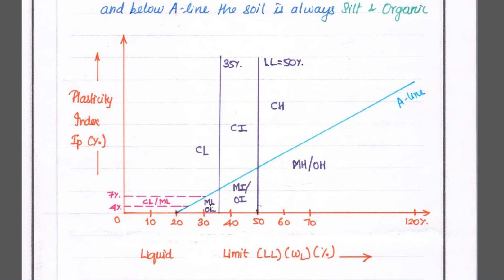Below 35% of liquid limit is low compressible silt (ML), between 35% to 50% is intermediate compressible silt (MI), and above 50% of liquid limit is highly compressible silt (MH).